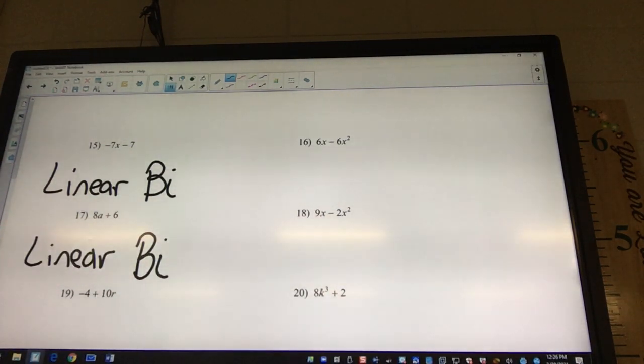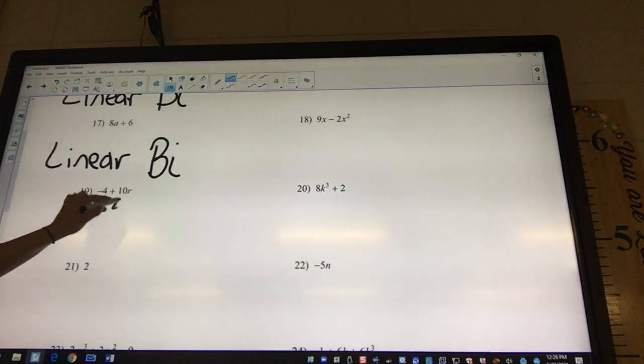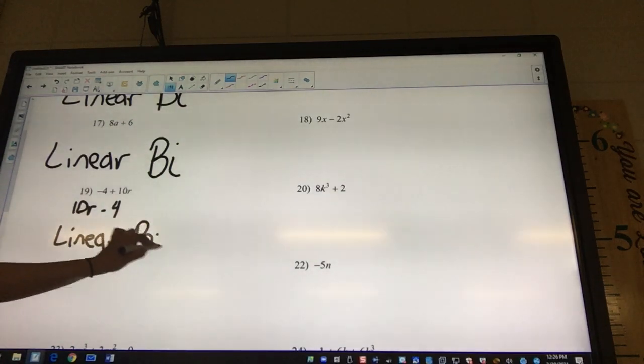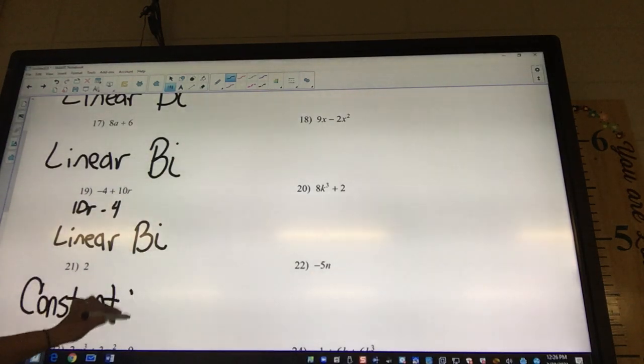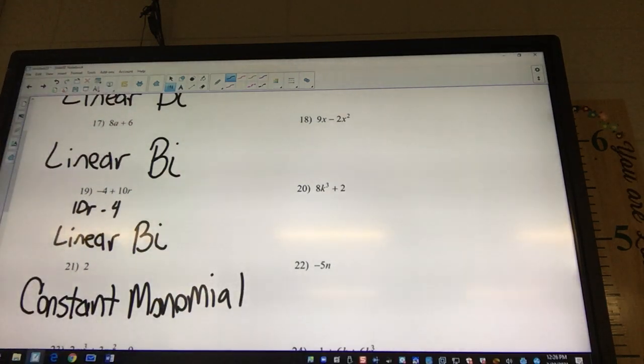Is 19 in order? No. No. What needs to go first? 10R. 10R. And then what? Minus 4. Minus 4. Okay, and then what is it going to be called? A linear bi. Linear bi. 21. Is it in order? Yep. So, it'll be constant monomial. Constant mon. No meal.